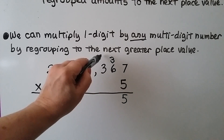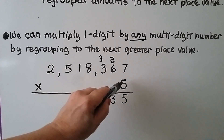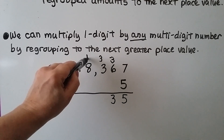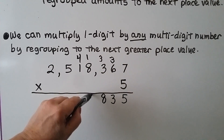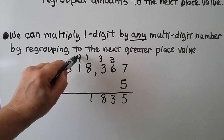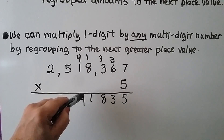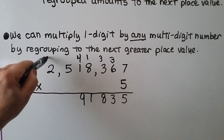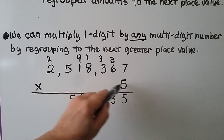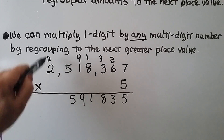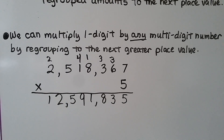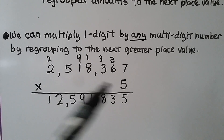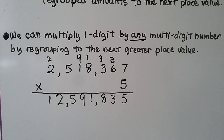Five times six is 30, plus three more is 33 — regroup the three, put the other three down. Five times three is 15, plus three more is 18 — regroup the one, put the eight down. Five times eight is 40, plus one more is 41 — regroup the four, put the one down. Five times one is five, plus four more is nine — put a nine here, don't need to regroup. Five times five is 25 — regroup the two, put the five down. Now five times two million: that's 10, 11, 12 million. We have 12,591,835. It doesn't matter how big the number is — we just keep multiplying to the next greater place value, regrouping if needed, then adding the regrouping at the next place value.